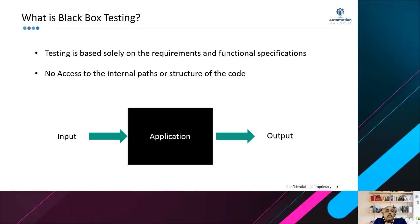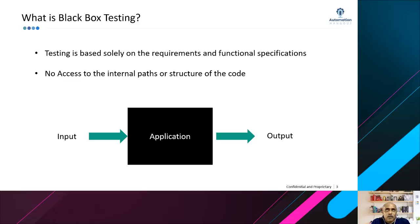So to start off, let's take a look at what black box testing is. If you look at testing as a whole, there are two types: white box testing, where you have access to the code of the application — you are seeing how the requirements are implemented — and this is mostly done by developers. Black box testing is where you don't have access to the code, so your testing is solely based on the requirements or functional specifications that your business analyst has written.